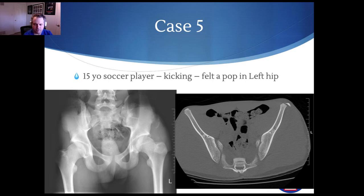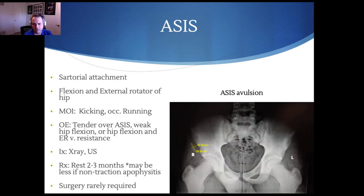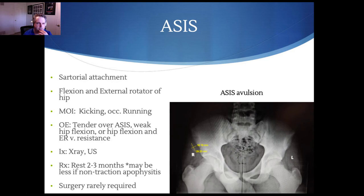This is the sartorius attachment — a strap muscle involved with flexing the knee and flexing the hip with a little bit of external rotation. This is commonly injured in soccer. With the anterior superior iliac spine, it can also occur with running, and they'll be quite tender over the ASIS. Clinically it's a clinical diagnosis. If there's an acute injury or concern about avulsion, I would recommend getting an x-ray. Sometimes you'll pick these up in adults on AP pelvis imaging.